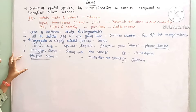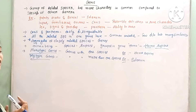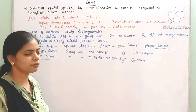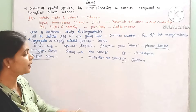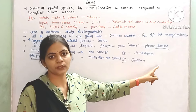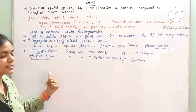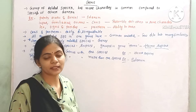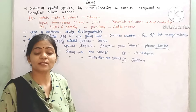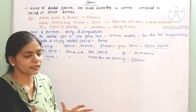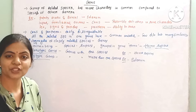Genus is of two types depending on the number of species: monotypic genus and polytypic genus. A monotypic genus has only one species — for example, Homo, which has only one species, sapiens. A polytypic genus has more than one species — for example, Solanum, which has different species like Solanum nigrum, Solanum tuberosum, and Solanum melongena.